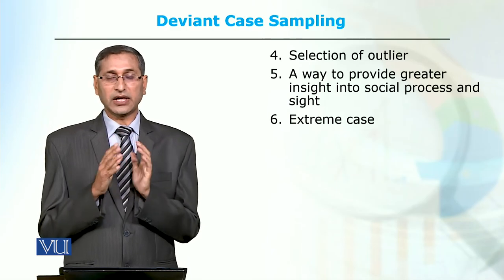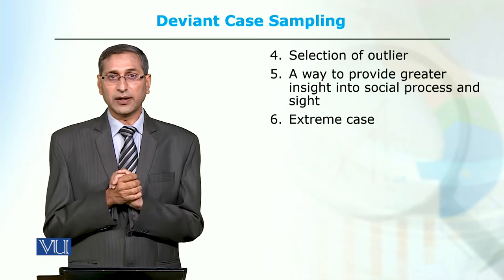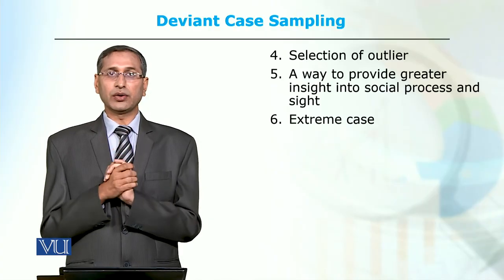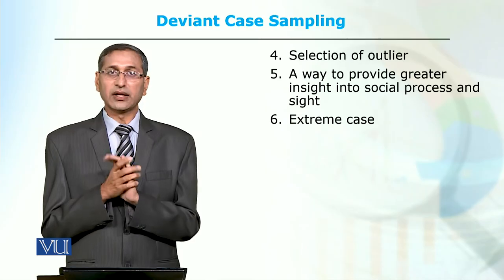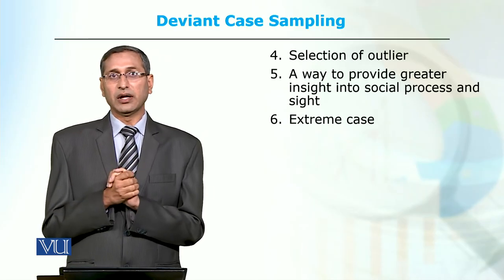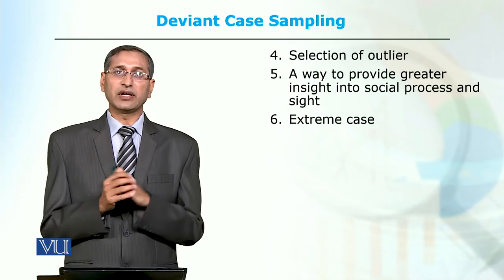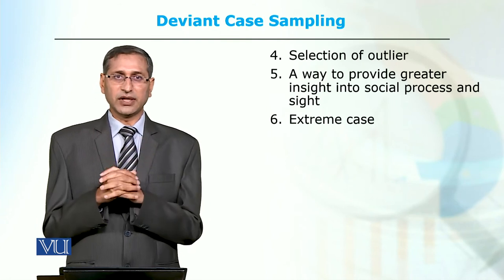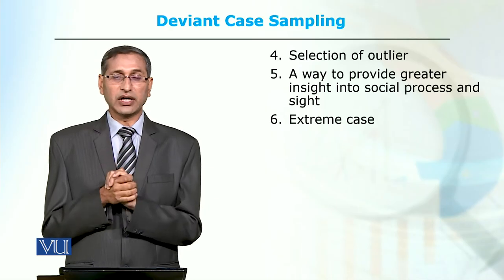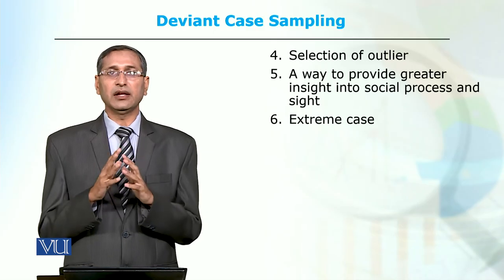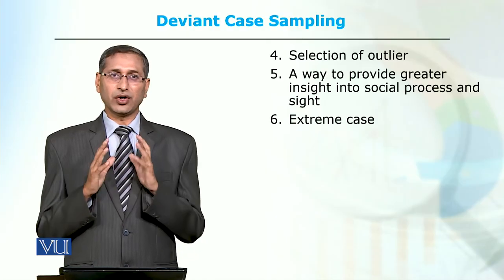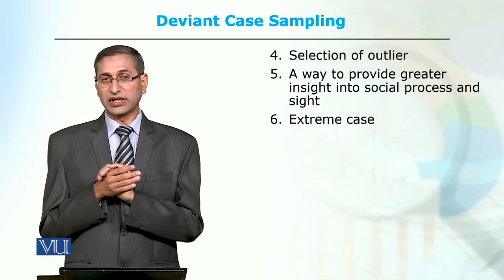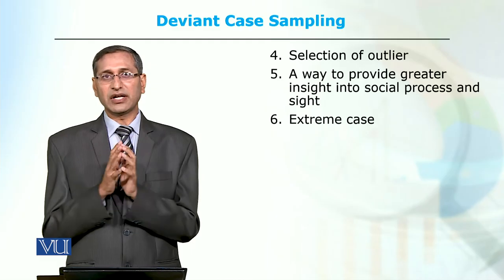یہ generally deviancy اور criminality سے related ہوتے ہیں، لیکن دوسرے topics بھی ہو سکتے ہیں۔ مثال کے طور پر entrepreneurship - certain areas میں کیوں ہے، کچھ چند لوگ ہی آگے کیوں نکلتے ہیں۔ Bill Gates ہی کیوں آگے نکل گیا یا Malik Riaz ہی کیوں آگے نکل گیا جبکہ دوسرے لوگ نہیں جا سکے؟ یہ بھی ایک قسم کے outliers ہیں، deviant cases ہیں جو چھوٹے level سے نکلتے ہیں اور certain skills اور قسمت استعمال کرتے ہوئے آگے چلے جاتے ہیں۔